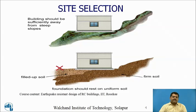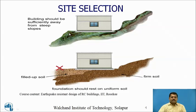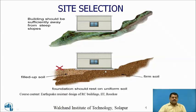First is site selection. There are two diagrams shown here. The building and slope are shown. The building should be sufficiently away from a steep slope. Whenever a building is to be constructed on a slope, first chip up that slope and make it horizontal. Build on firm ground. Most importantly, the foundation should rest on uniform soil. Here you can see firm soil or hard strata, and here it is filled up or reclaimed soil — two types of soil supporting the building, which is not expected.